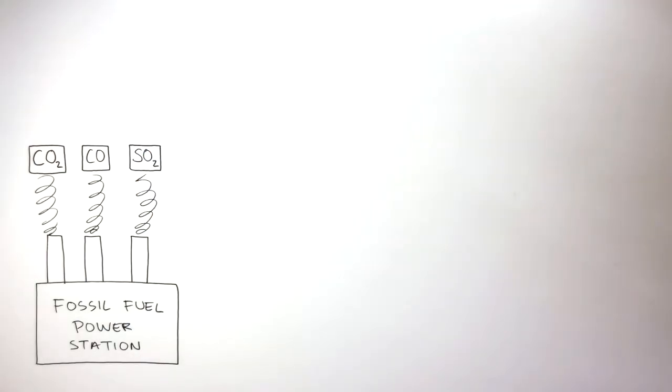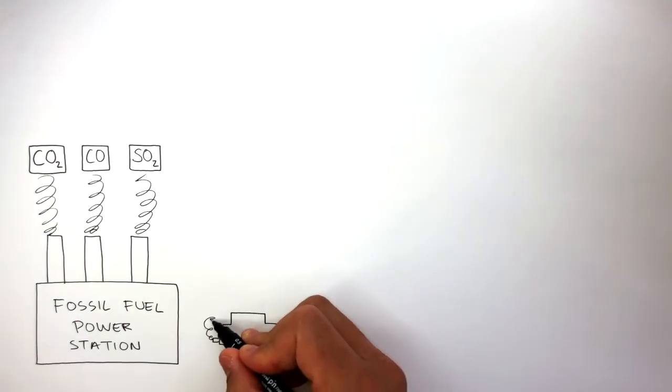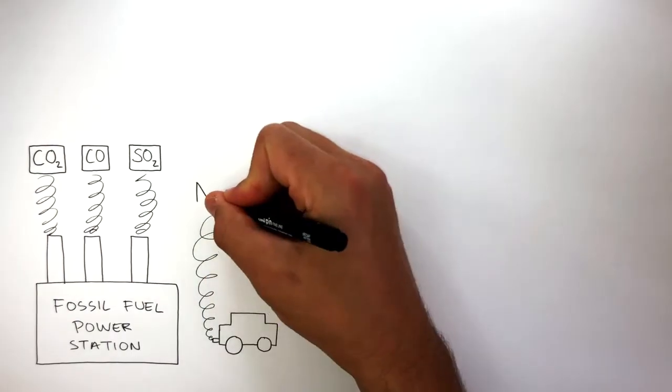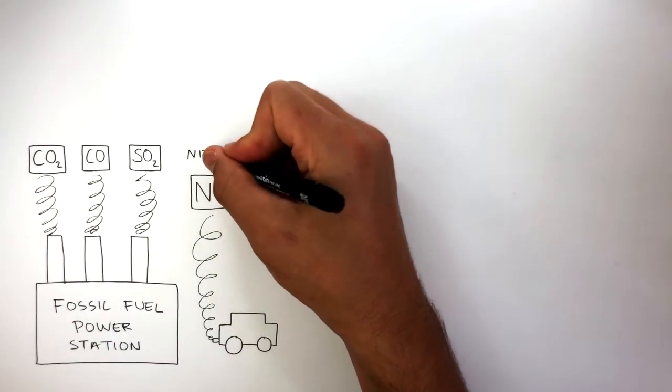To reduce sulfur dioxide emissions, the sulfur dioxide can be reacted with calcium oxide or calcium hydroxide. The combustion of fuels in cars also produces the same pollution, also including NO, which includes different nitrous oxides.